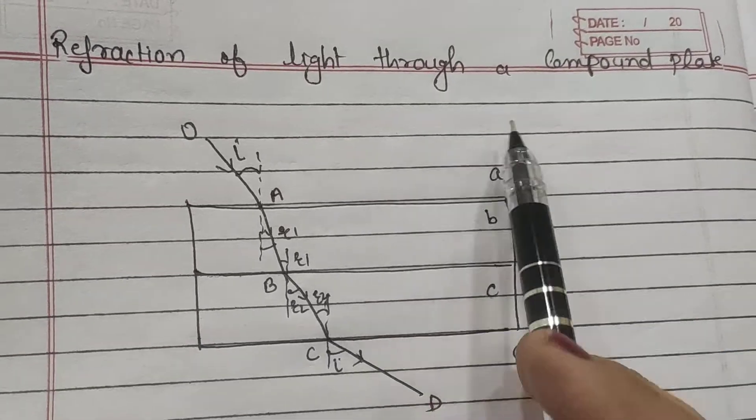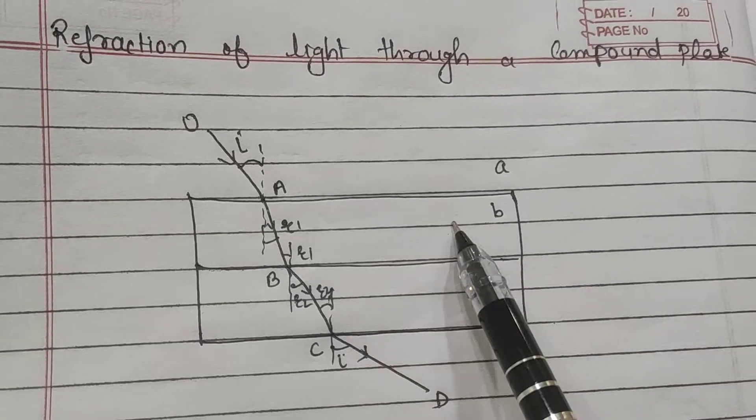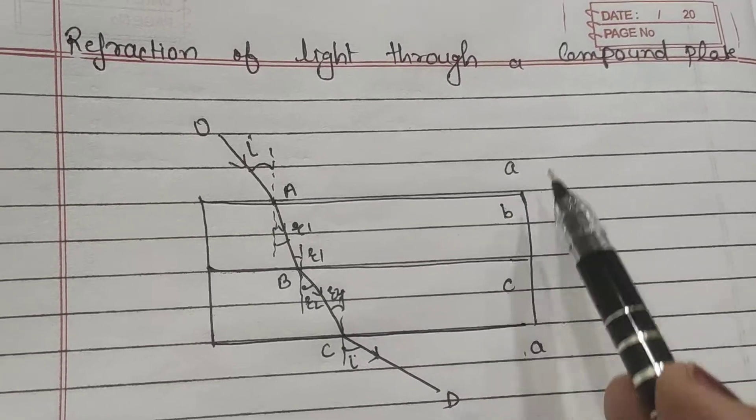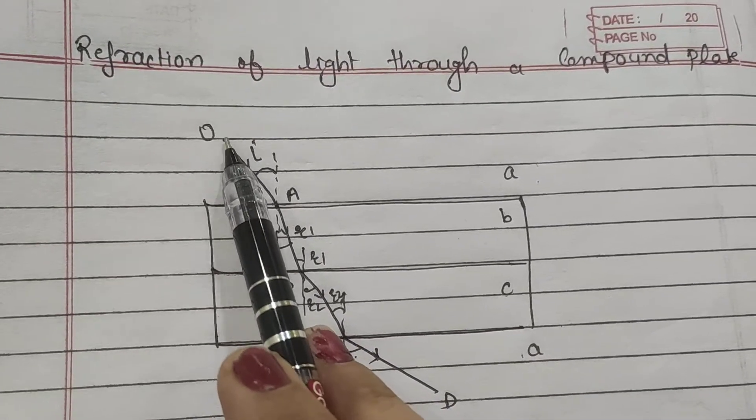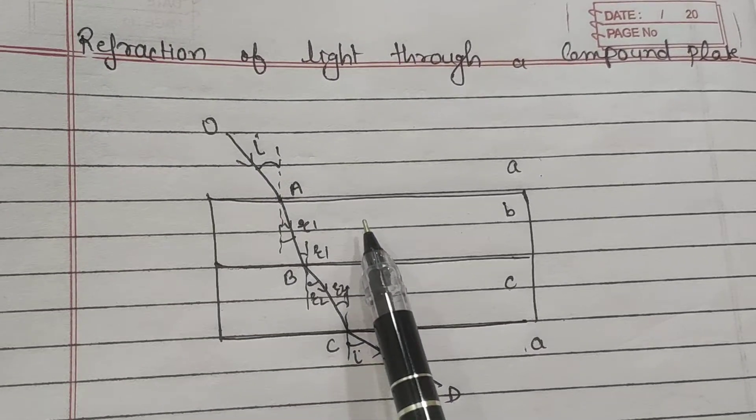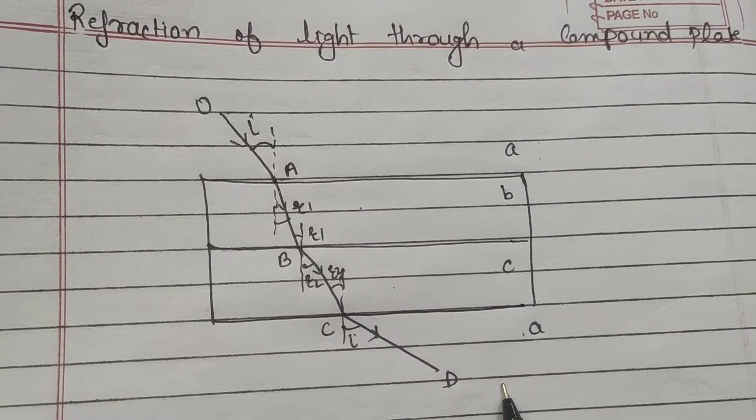Refraction of light through a compound plate. Here we are having a compound plate made up of two refractive indexes B and C, and A represents air. Light is entering from air and going to medium B, then to medium C, and then coming out in medium A.